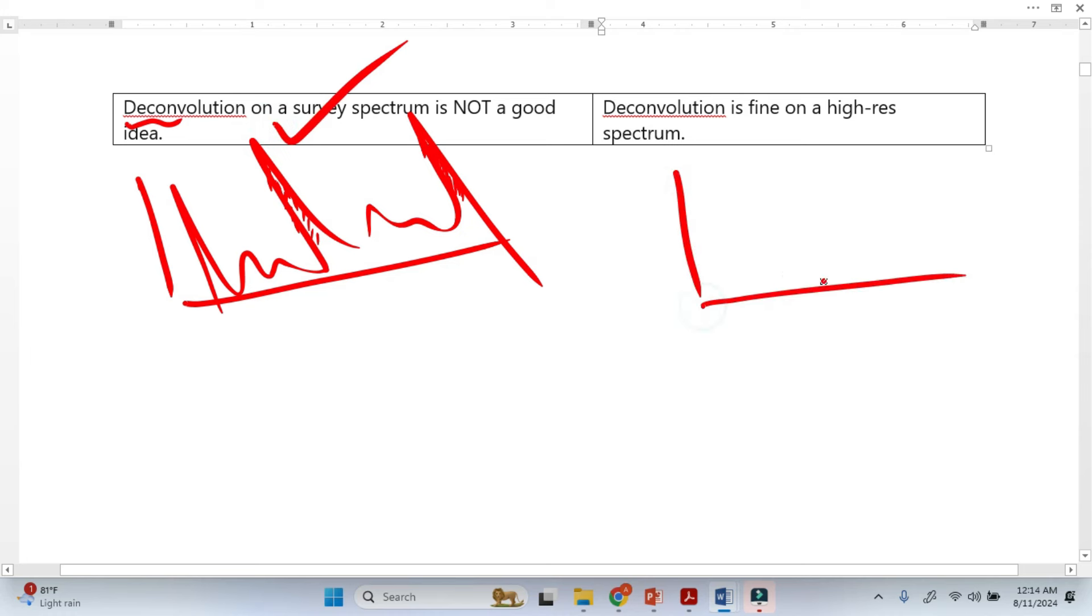While here in high resolution spectra, we see this doubling here. This was a convoluted peak here, and now we deconvolute because we can now see that these are basically two different peaks.